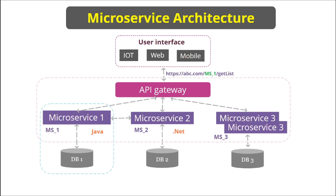In microservice architecture, what we do is separate the features from the application, and for each feature we create a small service — that small service is known as a microservice. Each service can be written in a different language; there is no need to write all microservices in a single language, and we can use different databases. For example, microservice one is written in Java and has its own database, while microservice two is written in .NET.